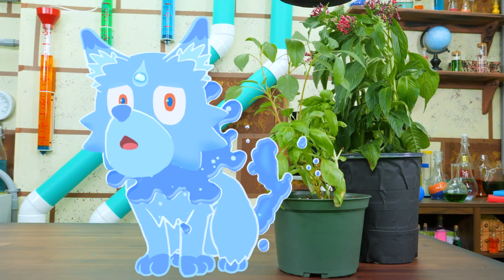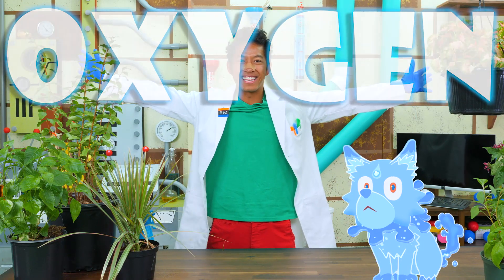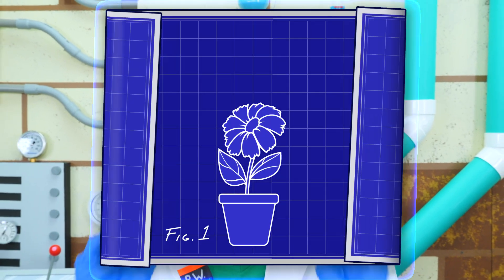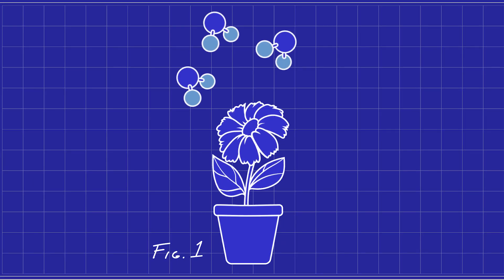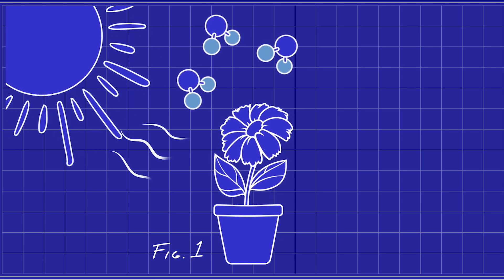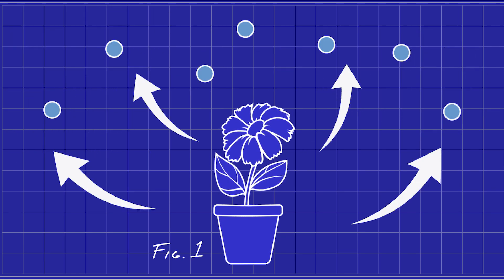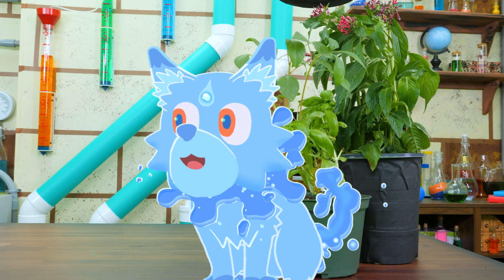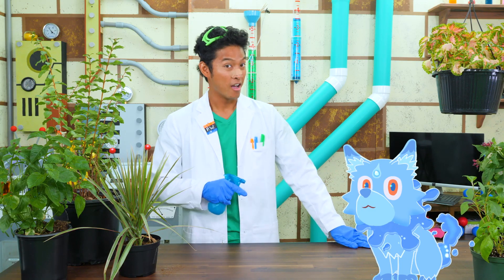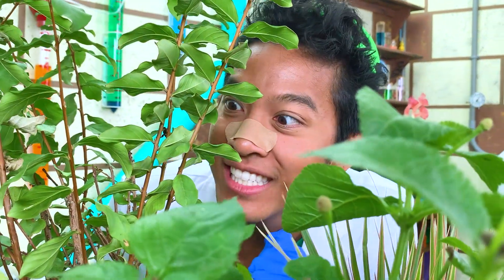That's right, H2O. If we provide plants with what they need, they provide us with what we need. Oxygen! Plants use a process called photosynthesis to produce oxygen. This means they take in carbon dioxide, sunlight, and water to produce oxygen. Yeah! Oxygen is such a wonderful element. Check it out. Wouldn't it be wonderful if we could see oxygen?